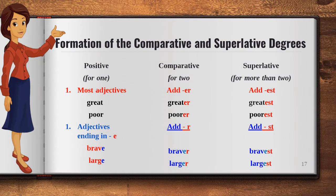Now let us see a few rules that most comparative and superlative adjectives follow. In most comparative adjectives, we add '-er' to the positive degree to make it comparative, and we add '-est' to the positive form to make it superlative. For example, 'great' becomes 'greater' in comparative and 'greatest' in superlative. 'Poor' becomes 'poorer' and 'poorest.' So in comparative we add -er and in superlative we add -est.